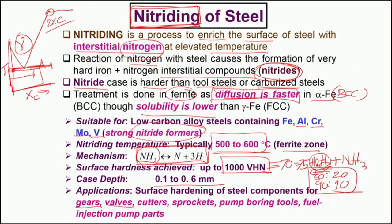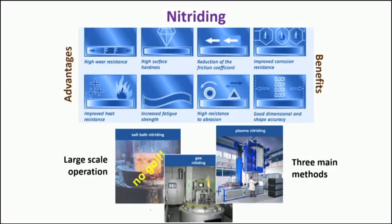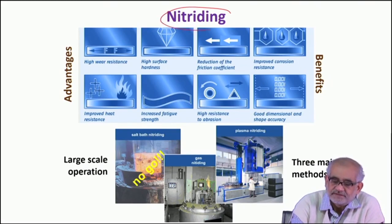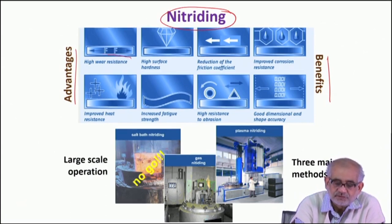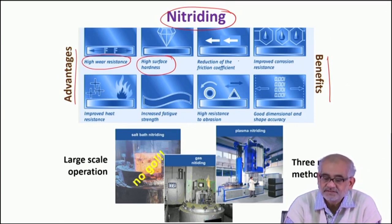Applications include gear components, valves, cutters, and various slicing equipment. Nitriding is very widely used not only for ferritic steel but also austenitic stainless steel. There are plenty of advantages: we derive high wear resistance, very high surface hardness — harder than what can be achieved through martensitic hardening — and the coefficient of friction is reduced to a very significant extent so the surface is very smooth and does not offer much wear.